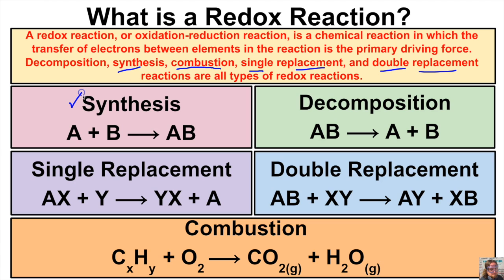In an earlier video we spoke about synthesis, decomposition, single replacement, double replacement, and combustion reactions. In this video we are going to take a closer look at these types of chemical reactions — these redox reactions — and see what's taking place on a microscopic level with the electrons as these elements start to react with one another. First, let's talk about oxidation states of elements.